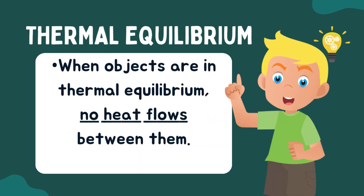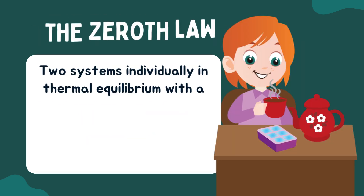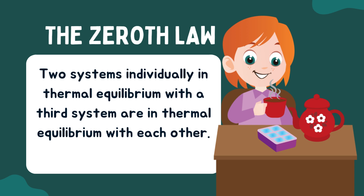The temperature of the thermometer is also the temperature of the substance. When the objects are in thermal equilibrium, no heat flows between them. Two systems individually in thermal equilibrium with a third system are in thermal equilibrium with each other.